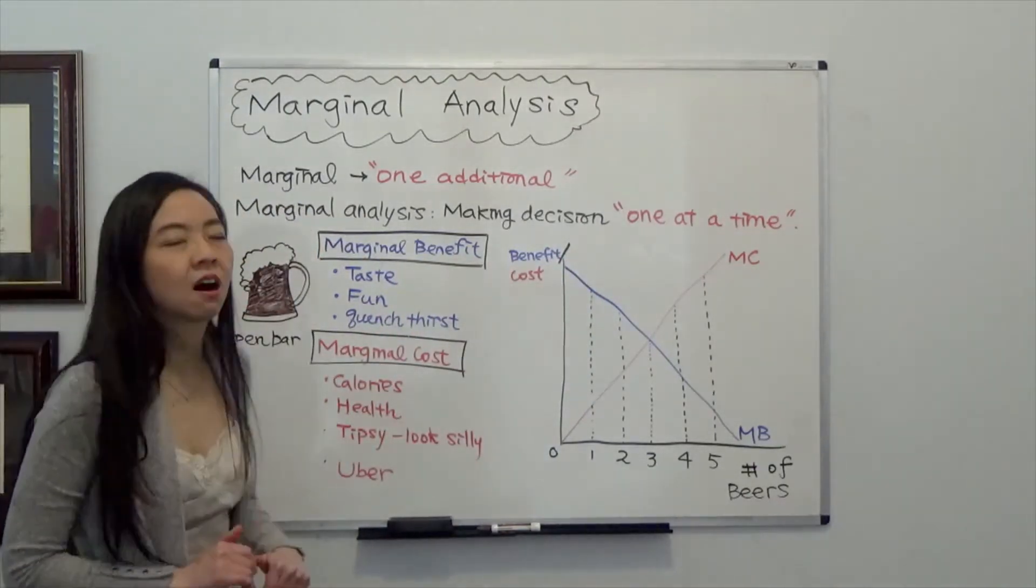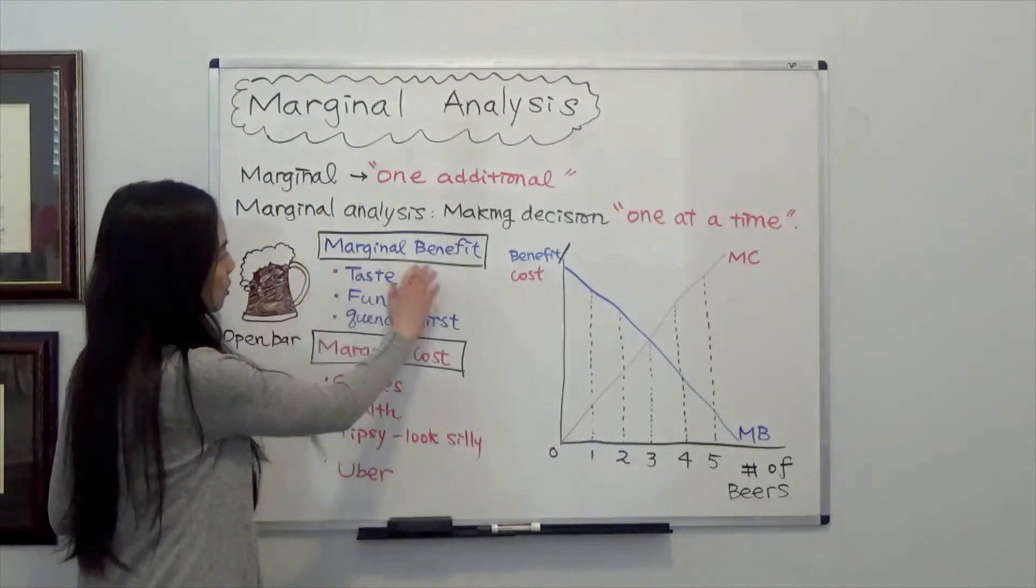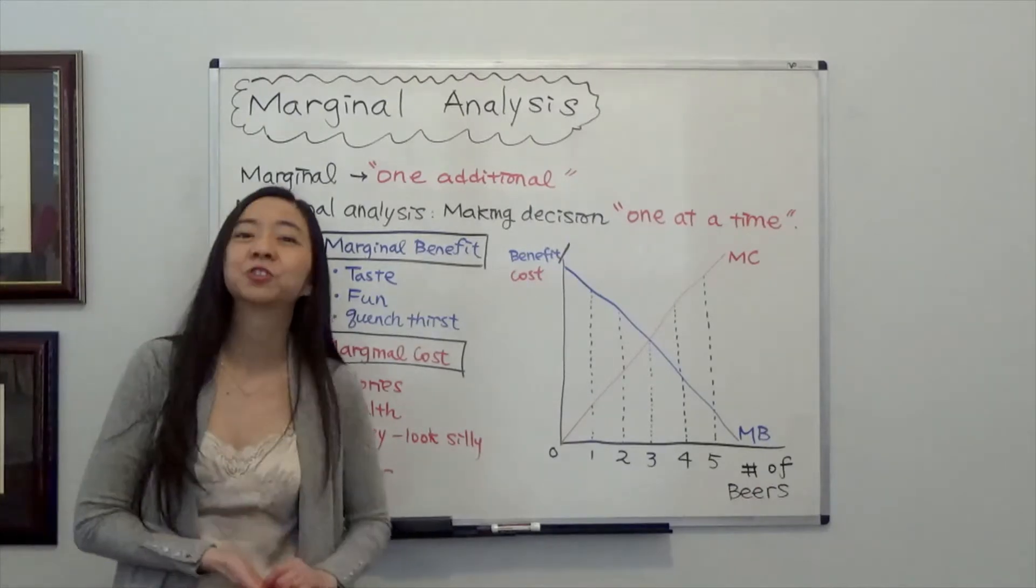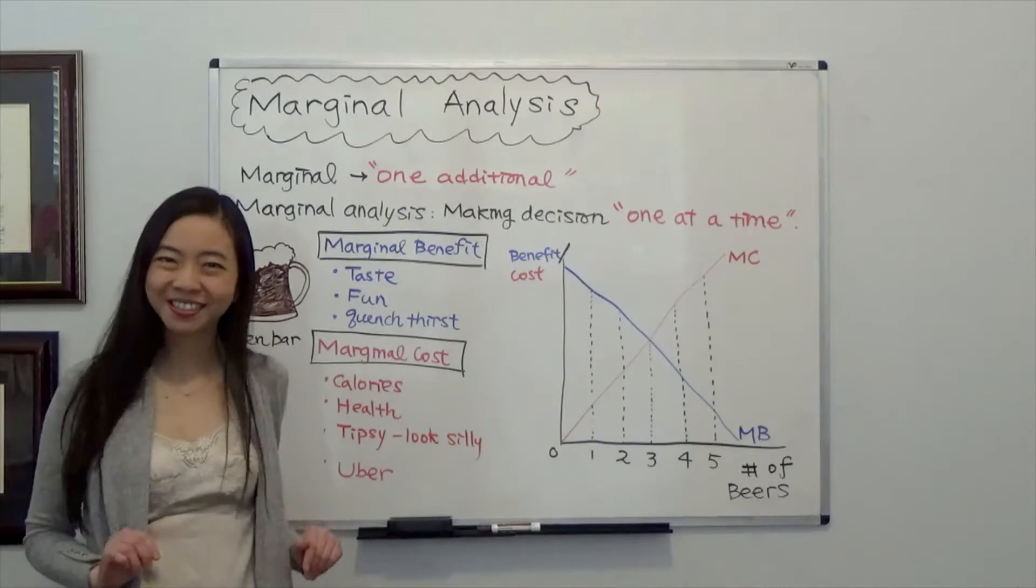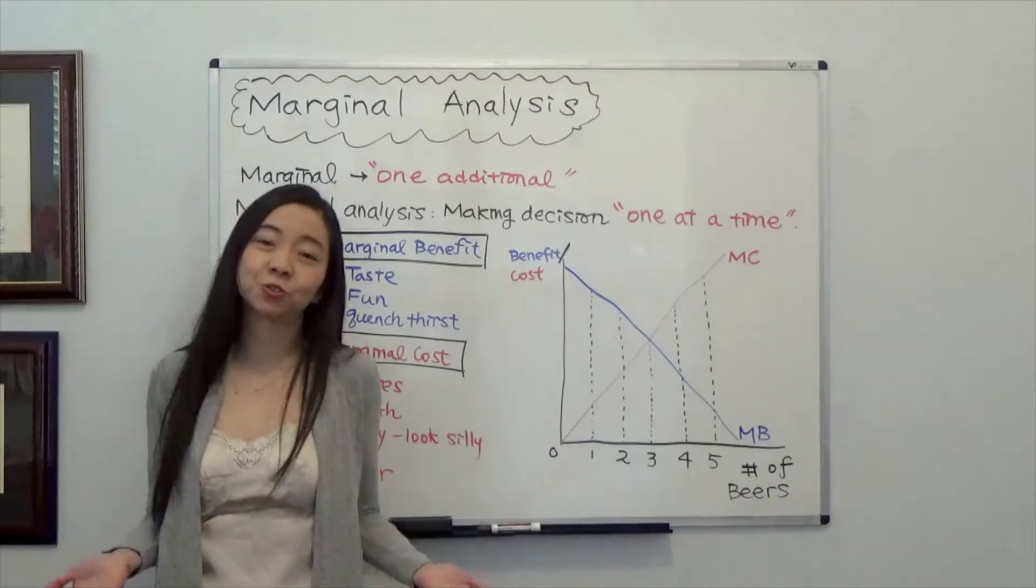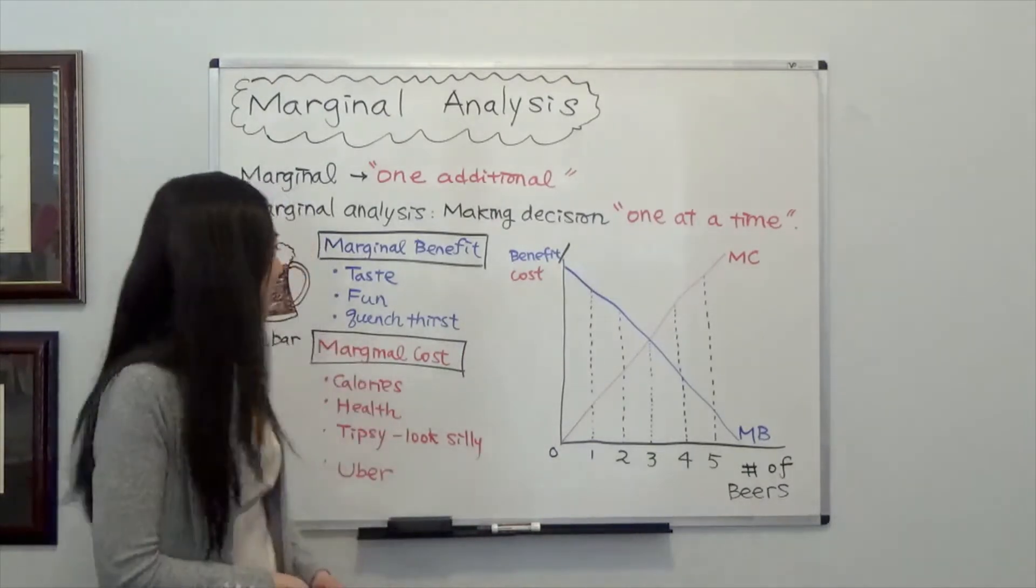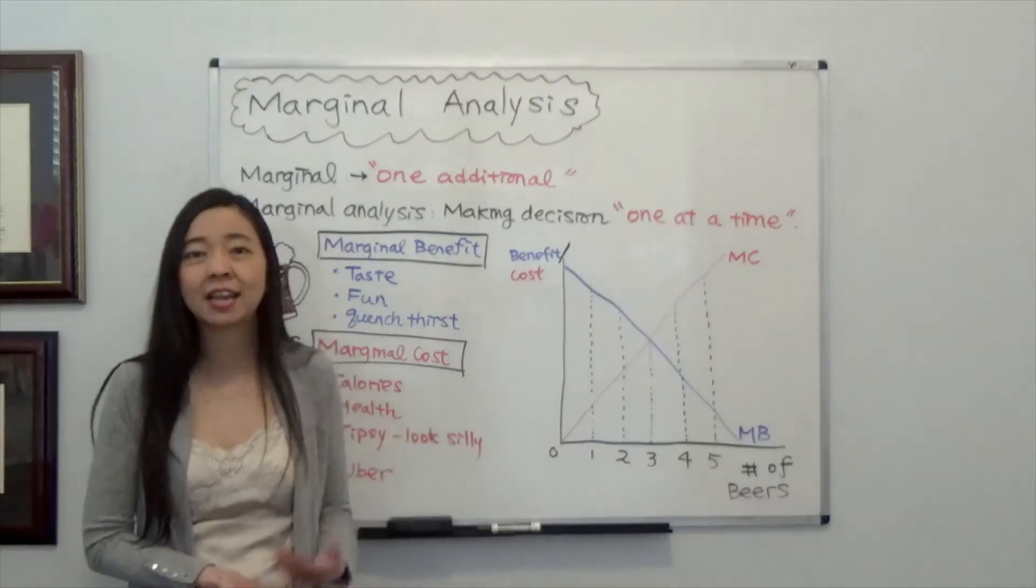And let's think about the cost and benefit of drinking a beer. So the marginal benefit of drinking a beer means the benefit of drinking one additional beer. So the benefit would be, well, the taste is good if you like beer. And also it's fun because all your friends are drinking beer and you mingle with them so you also want a can of beer. And maybe a beer quenches your thirst. You just arrived at the party and you're thirsty.